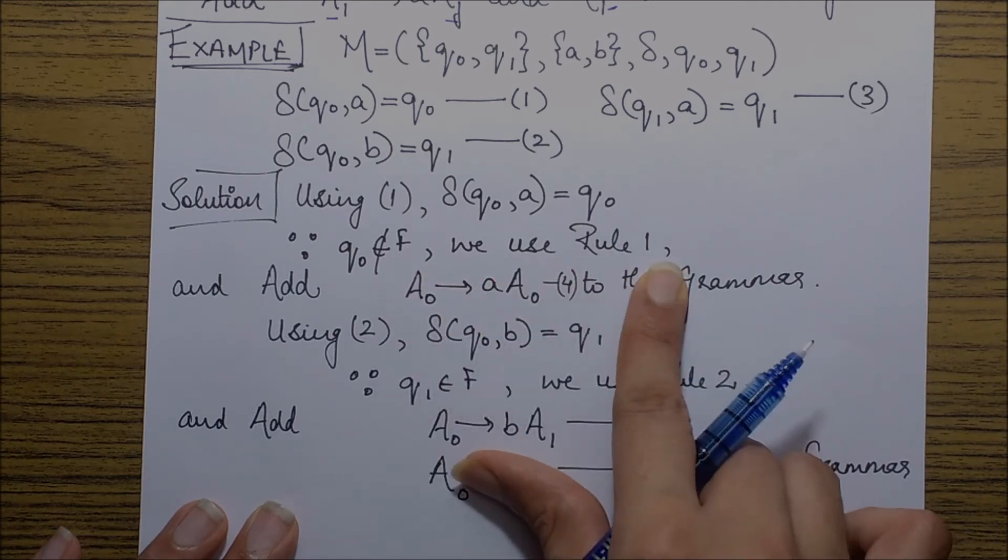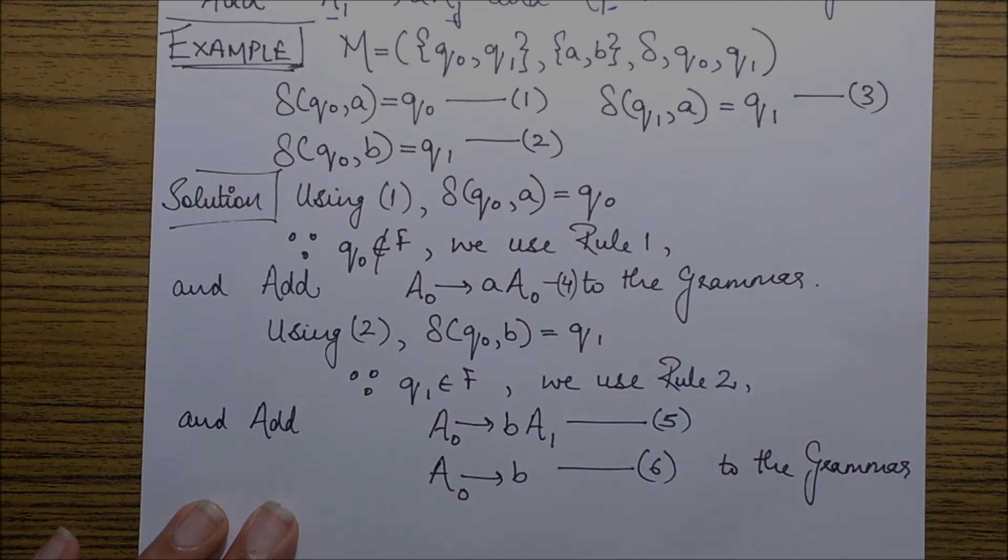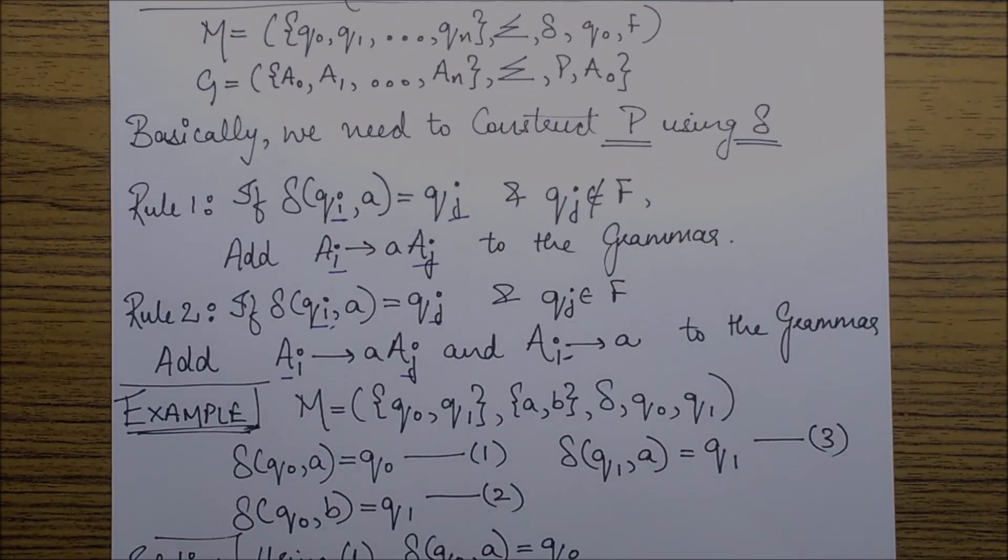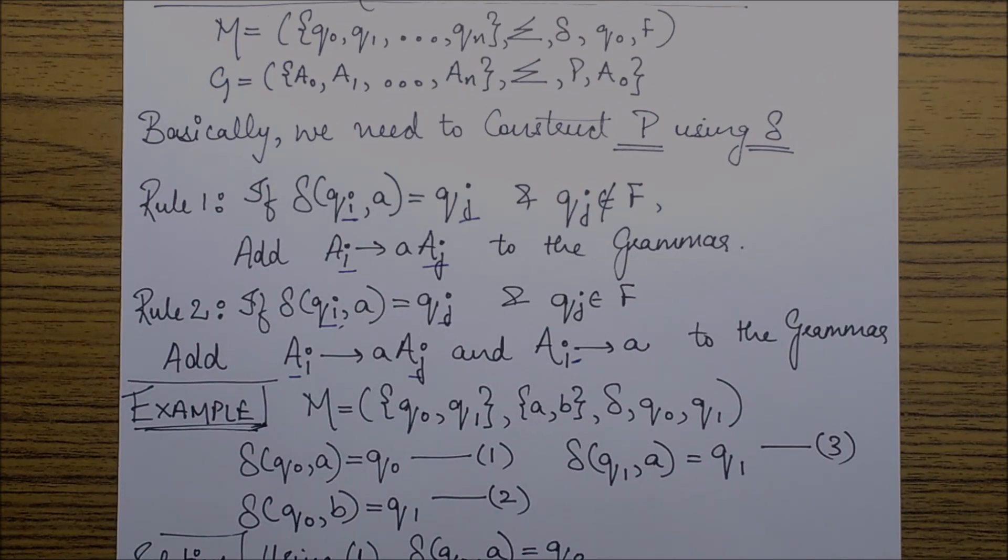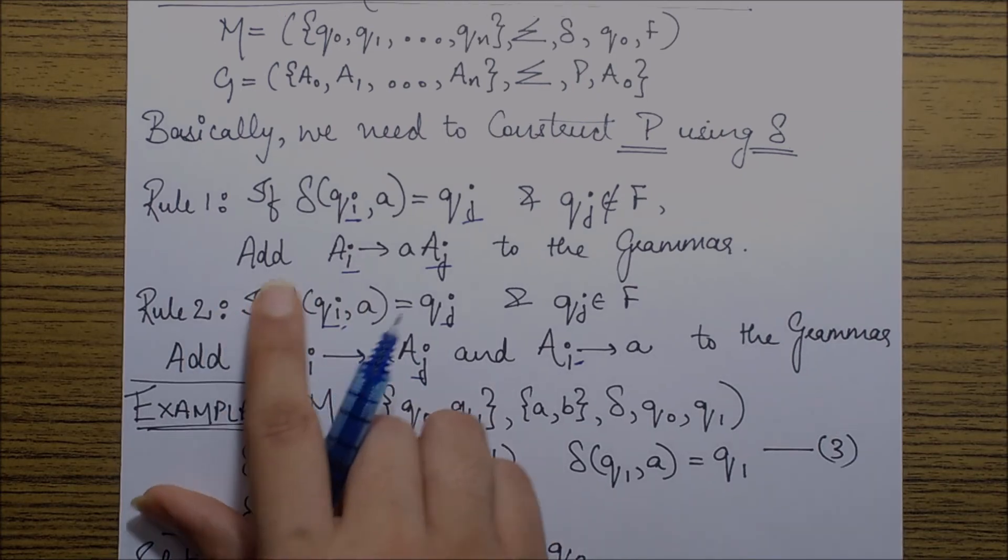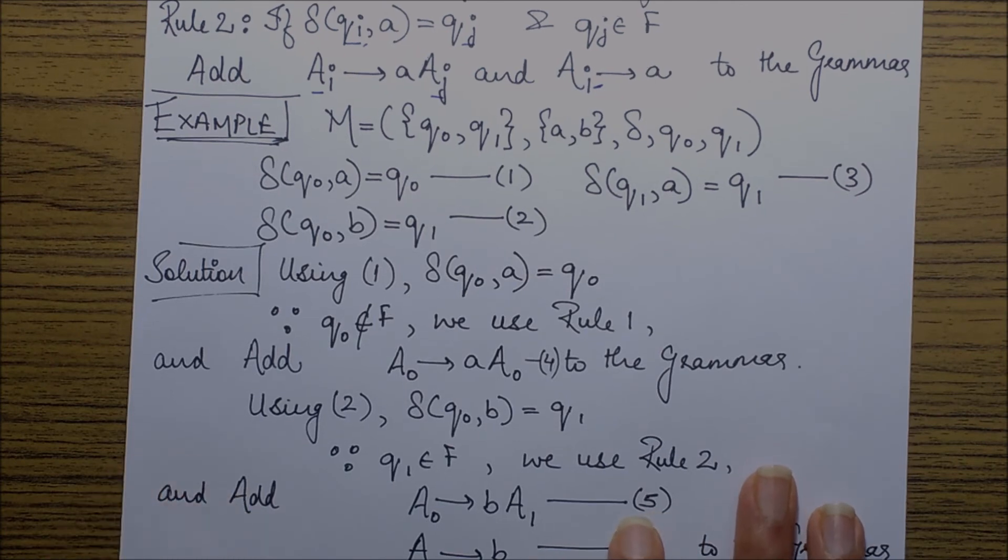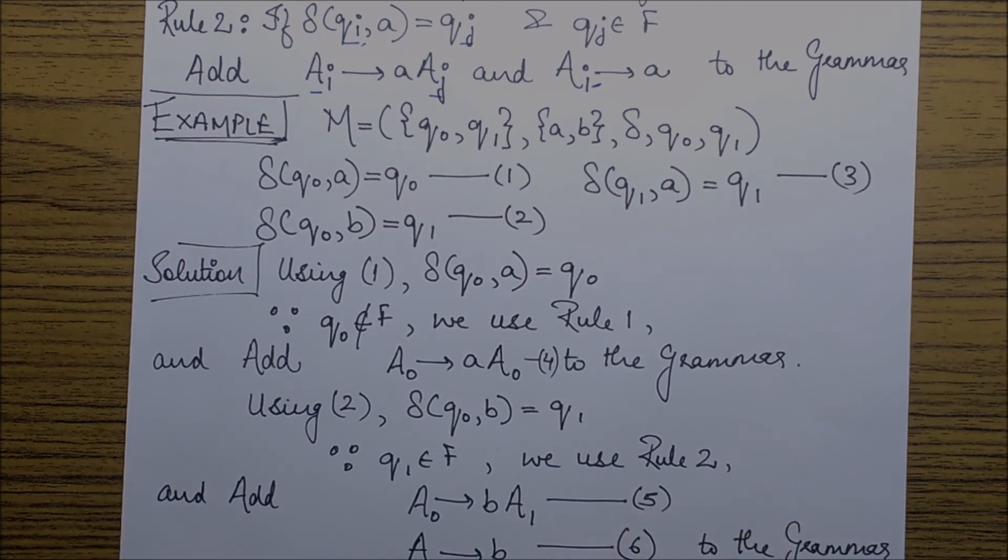Now using rule 1 that we had discussed, if there is a transition present of this form which is the first transition, and also q naught is not a final state, so therefore we use rule 1.